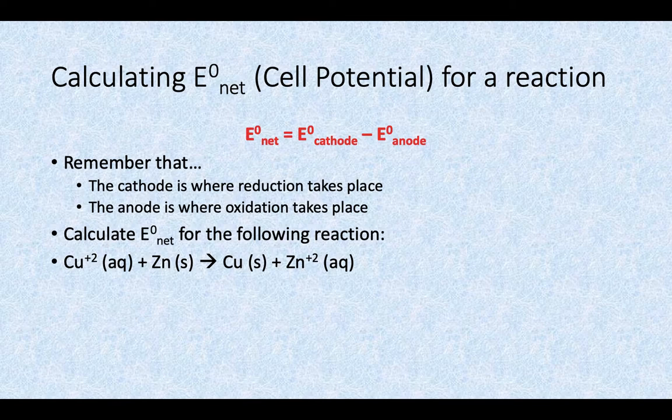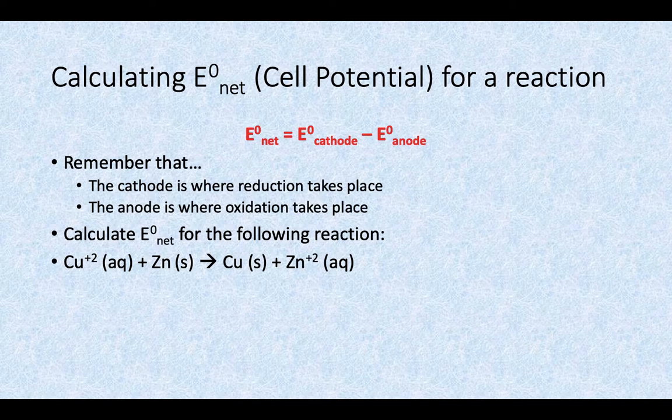So if our equation says to do cathode minus anode, the copper is the one that's happening at the cathode, the zinc at the anode.